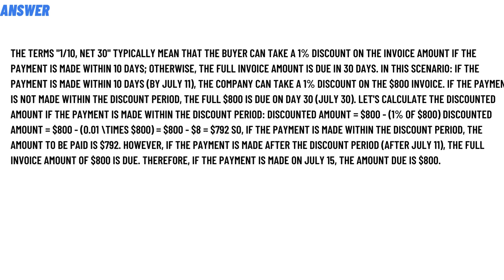In this scenario, if payment is made within 10 days by July 11, the company can take a one percent discount on the $800 invoice. If payment is not made within the discount period, the full $800 is due on July 30. Let's calculate the discounted amount: $800 minus one percent of $800.